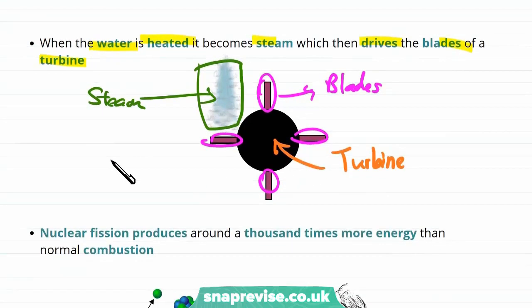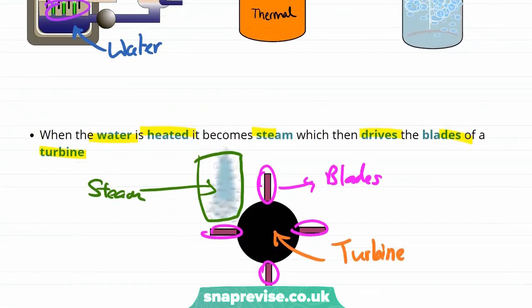So why do we want our turbine to spin? The turbine is connected to a generator, so when the turbine spins it can be used to create electricity.